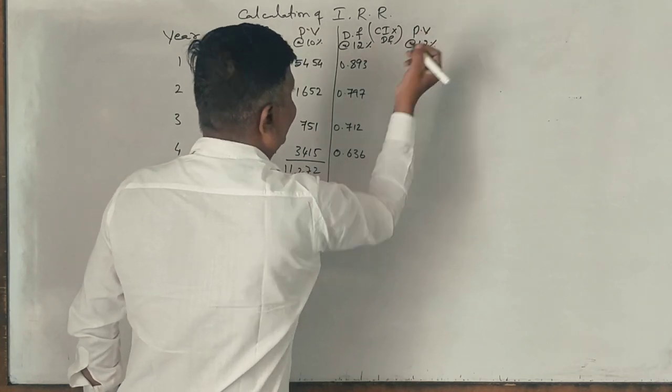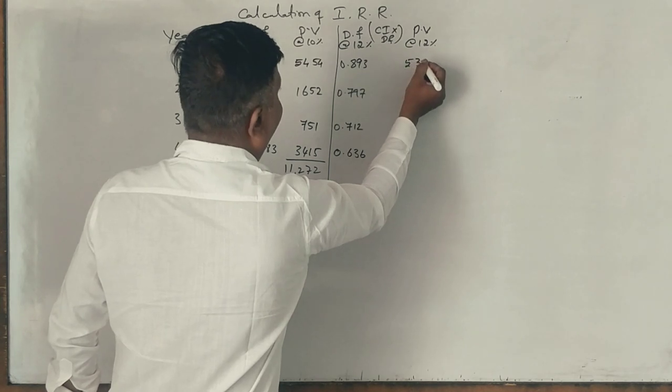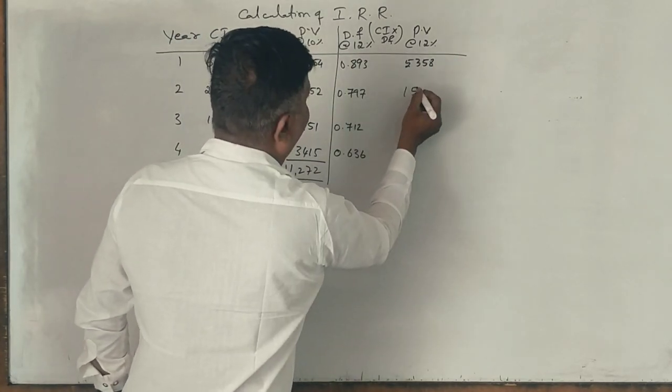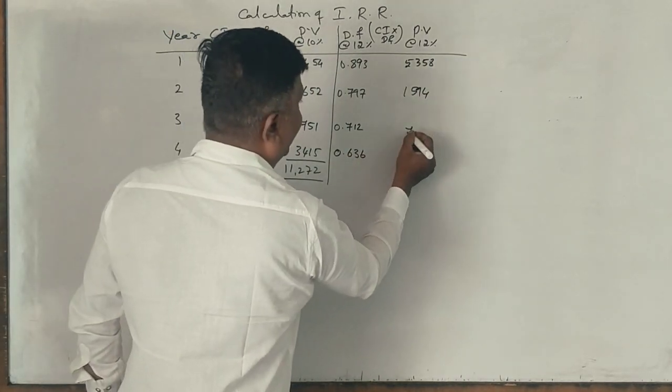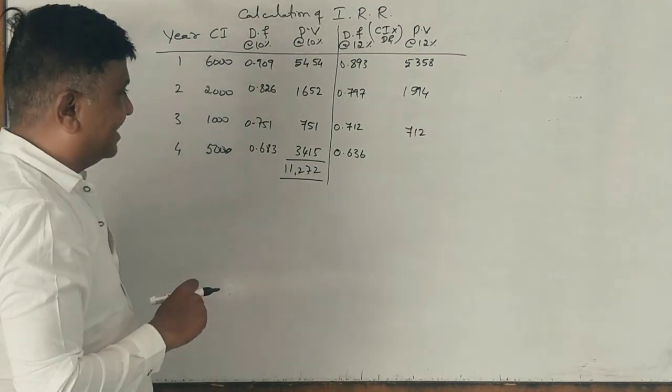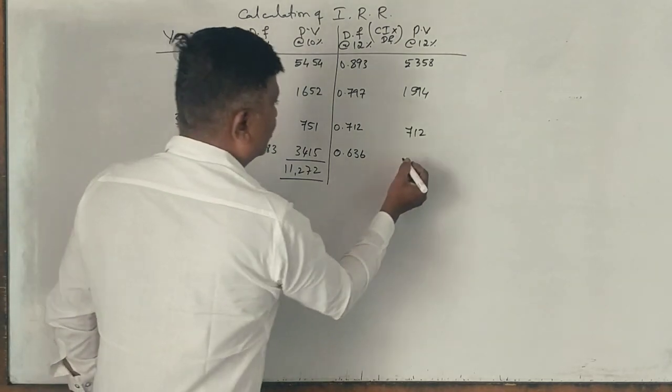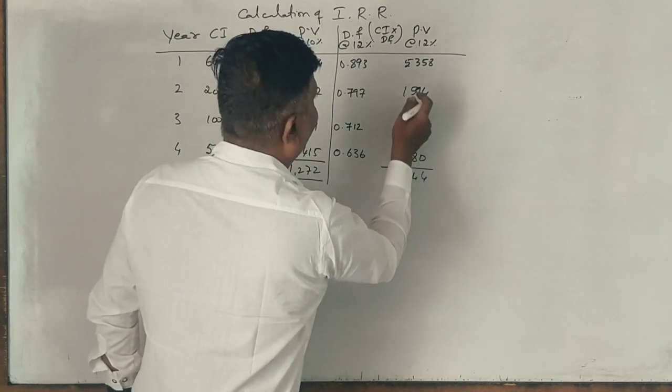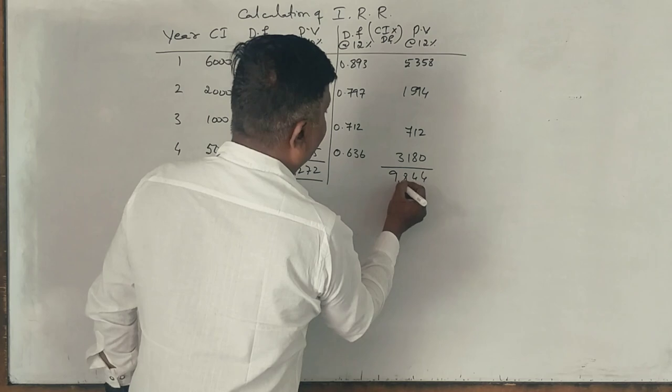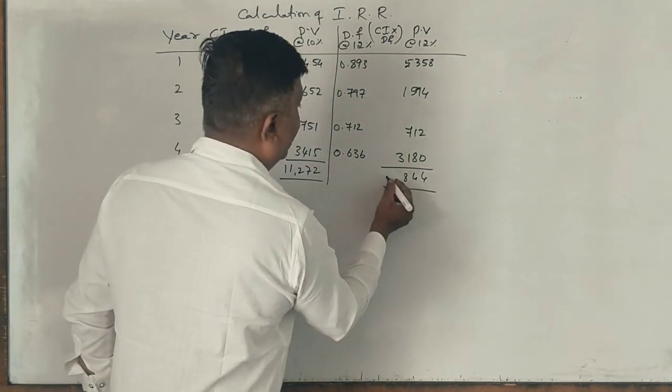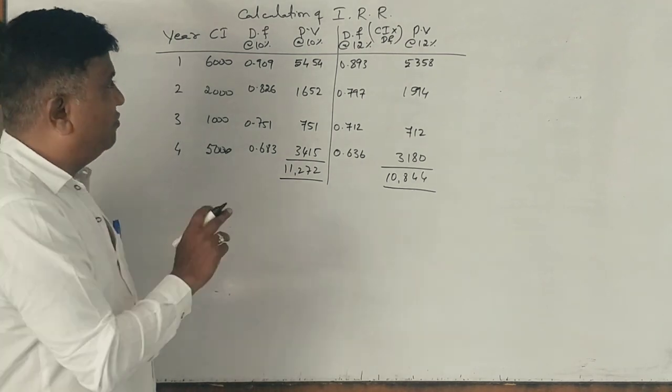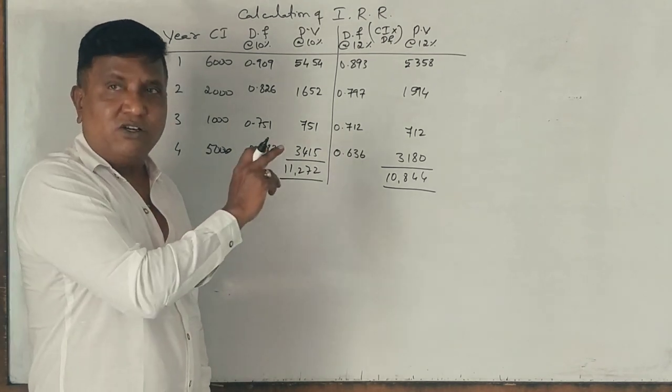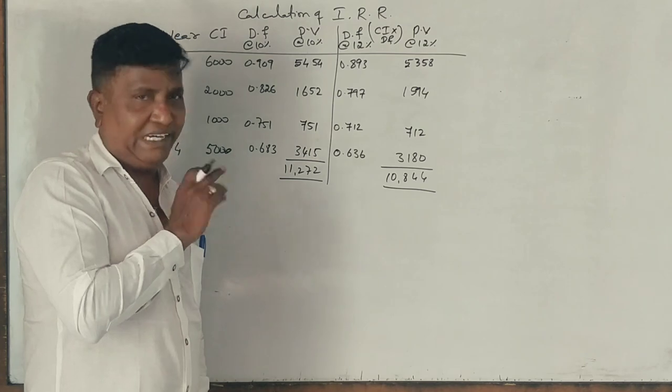Okay, 6,000 into point, present value values at 12%. Here tell me: 5,358. 2,000 into 0.797: 1,594. 1,000 into 712. 5,000 into 0.636: 3,180. Correct. 10,844. 10,844. Correct.